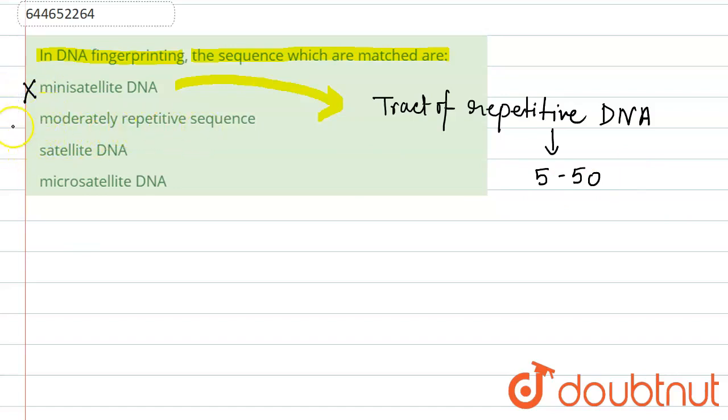Moderately repetitive sequence is also not used in DNA fingerprinting method. D, satellite DNA: if you talk about satellite DNA, it is the portion of DNA consisting of tandem repeating sequences.